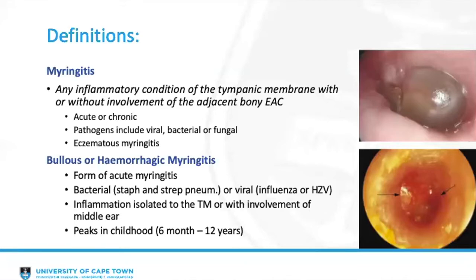Just a few definitions to avoid any confusion. The term myringitis in isolation denotes an inflammatory condition of the tympanic membrane involving its lateral surface, with or without involvement of the adjacent bony external auditory canal. It can be subclassified as acute or chronic based on duration, or further by underlying pathogen into viral, bacterial, fungal, or eczematous myringitis.